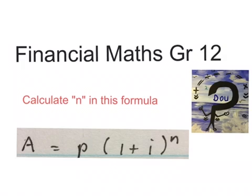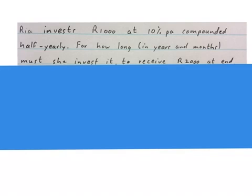The question reads: Rhea invests R1000 at 10% per annum compounded half-yearly. For how long in years and months must she invest it to receive R2000 at the end?